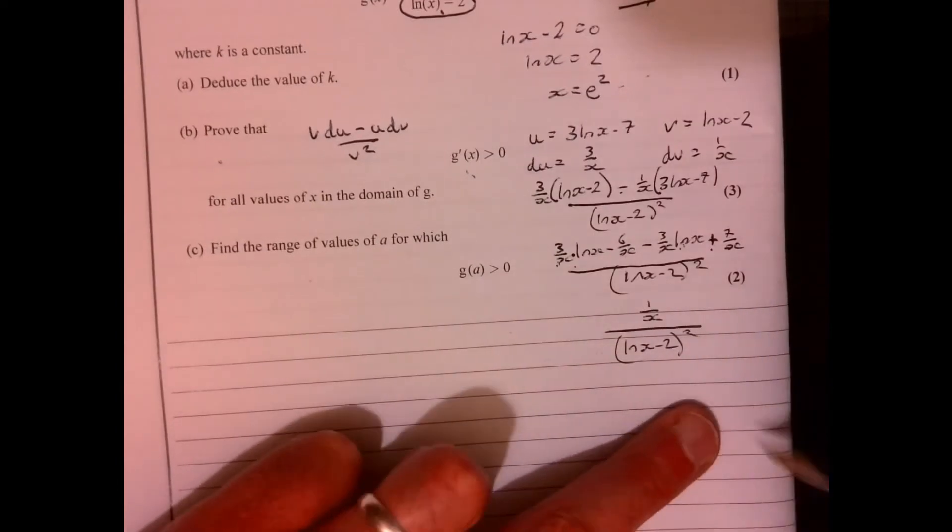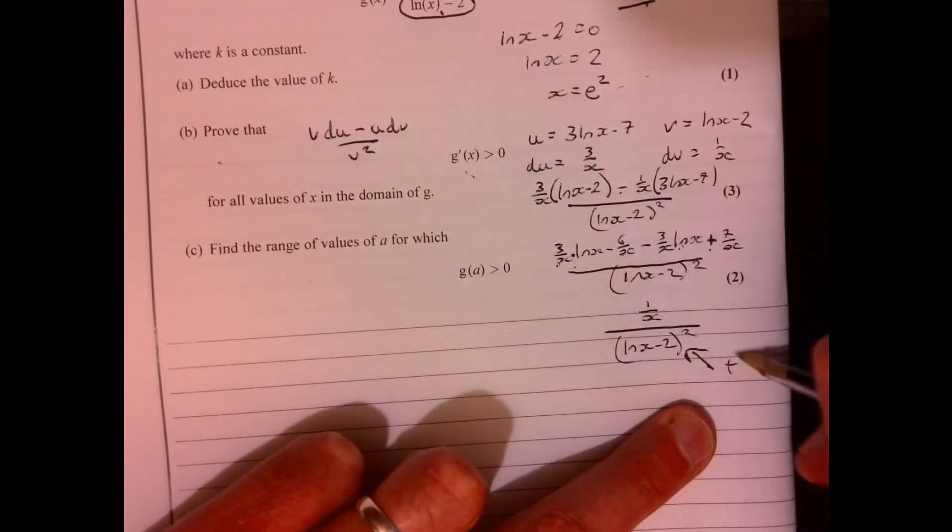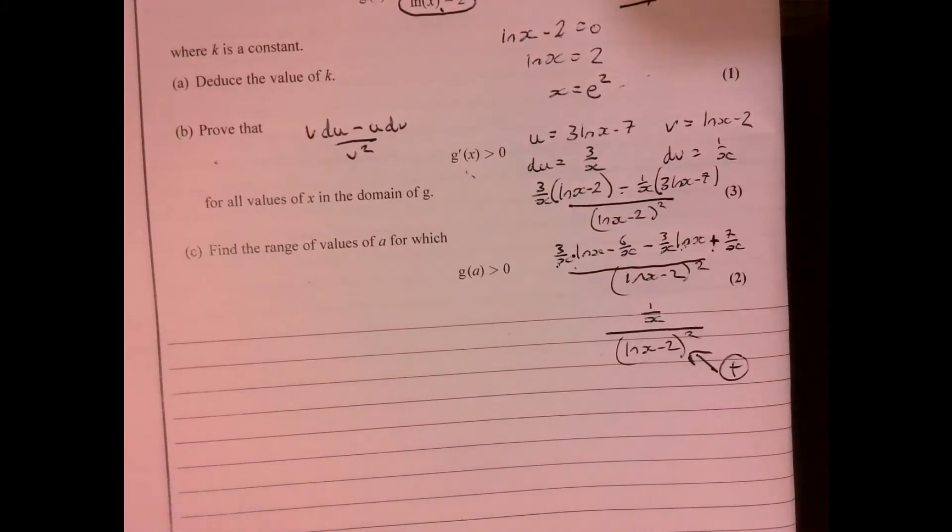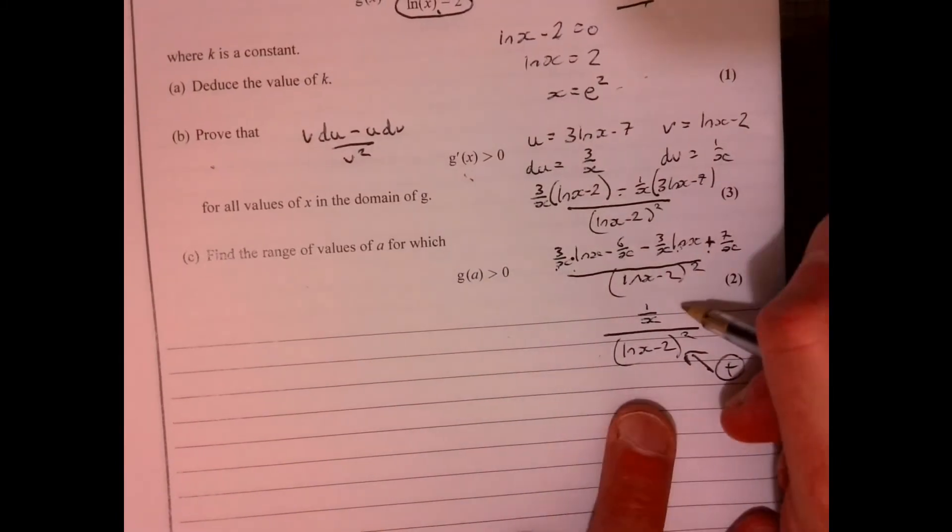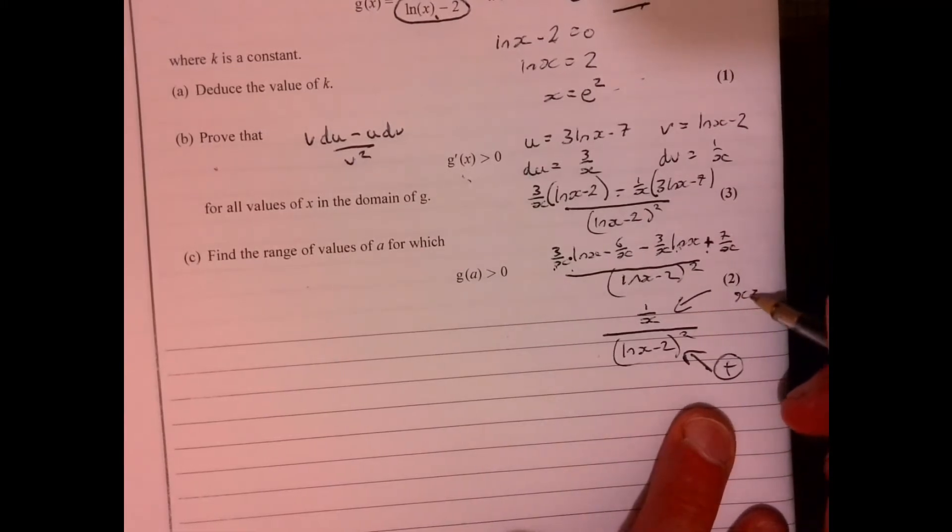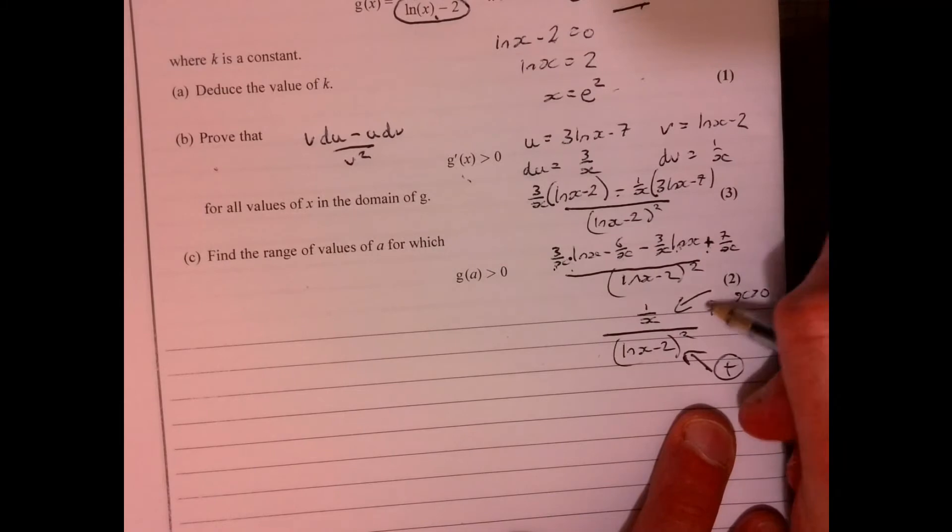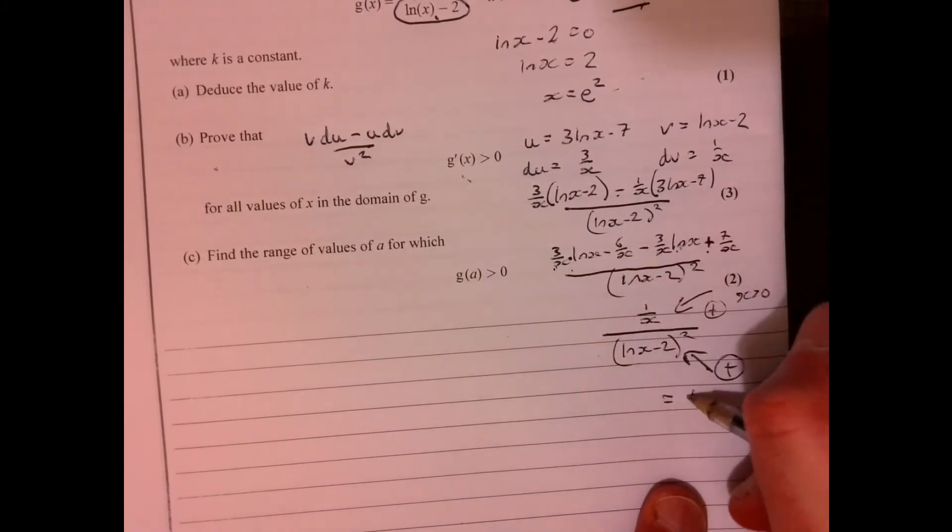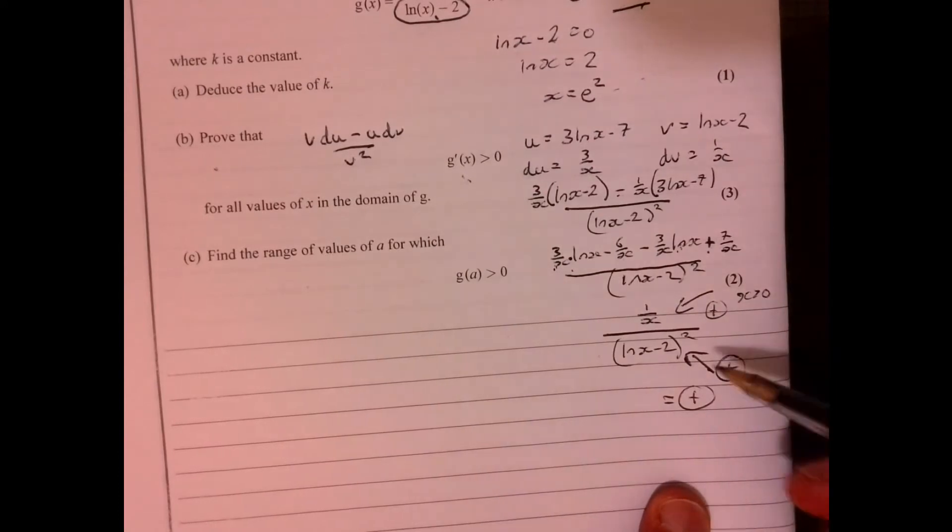Right, what's going to happen here? Well, that bit, that's a positive, isn't it? You square something, you're always going to get a positive answer. And this bit here, well, remember, x has to be more than 0. So therefore, that's got to be positive. Therefore, the whole answer has to be positive. You've got positive divided by positive.